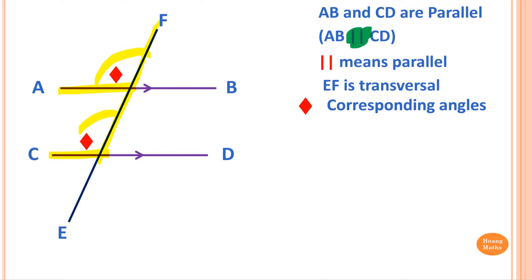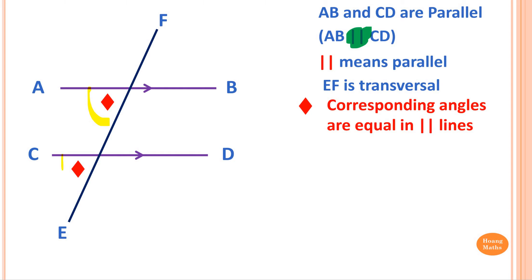It can also be like this — also corresponding angles — it's like the letter F here. These two angles are corresponding. These angles are equal because these two lines are parallel. Please take note: the reason is corresponding angles are equal in parallel lines.